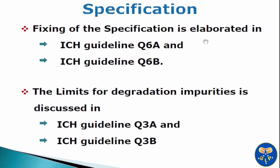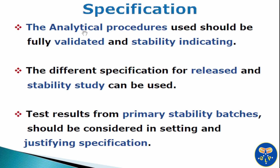The fixing of specification is elaborated in ICH guidelines Q6A and Q6B. The limits for degradation impurities are discussed in ICH guidelines Q3A and Q3B. The analytical procedures used should be fully validated and stability indicating. Different specifications for release and stability study can be used. The test results from primary stability batches should be considered in setting and justifying specification.